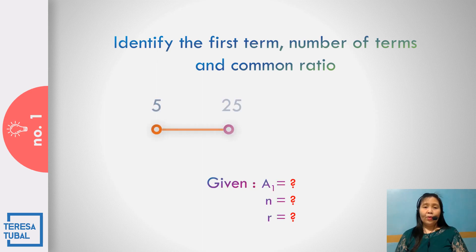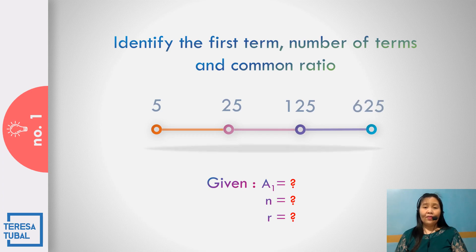Question number 1. In the geometric sequence 5, 25, 125, and 625, the first term is 5. The number of terms is 4, so n is 4. The common ratio is equal to 5, because the second term divided by the first term — that is 25 divided by 5 — is equal to 5.